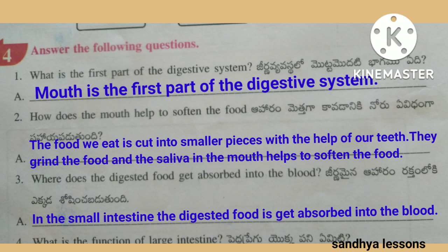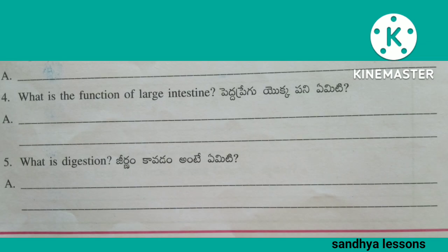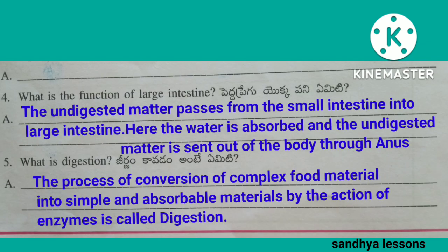Third question: Where does the digested food get absorbed into the blood? Fifth question: What is digestion? The process of conversion of complex food material into simple and absorbable materials by the action of enzymes is called digestion.